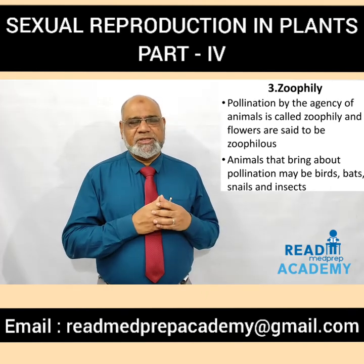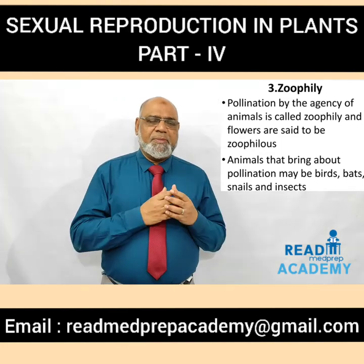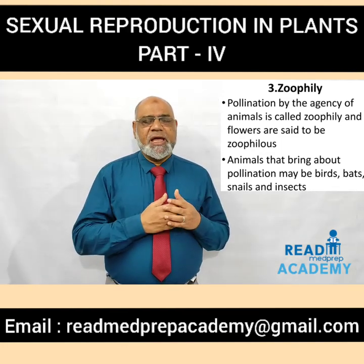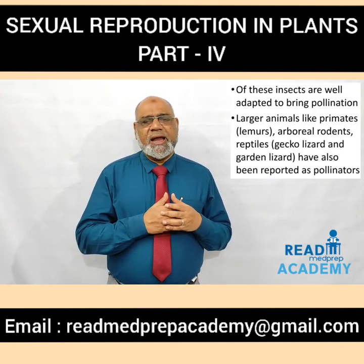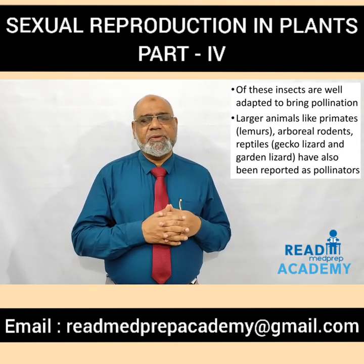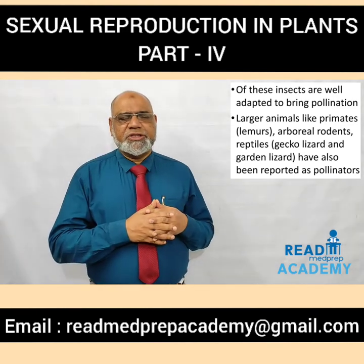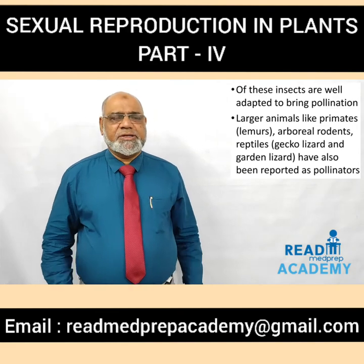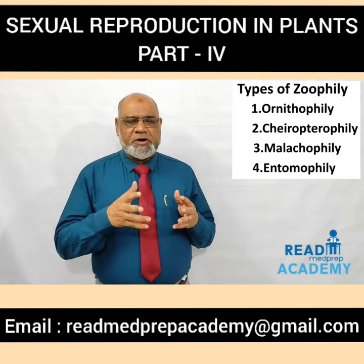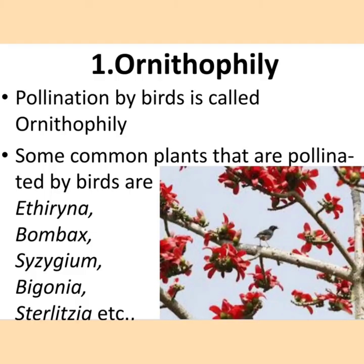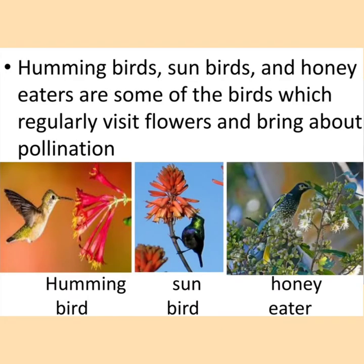What is zoophily? Pollination by the agency of animals is called zoophily and flowers are said to be zoophilous. Animals that bring about pollination may be birds, bats, snails, and insects. Of these, insects are well adapted to bring pollination. Larger animals like primates, lemurs, arboreal rodents, and reptiles like gecko lizard and garden lizard have also been reported as pollinators. The few types of zoophily are: ornithophily, chiropterophily, malacophily, and entomophily. Ornithophily is pollination by birds. Some common plants that are pollinated by birds are Erythrina, Bombax, Syzygium, Begonia, and Strelitzia.